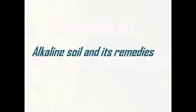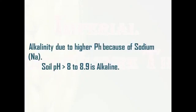So nowadays, alkaline soil is a very important point. Some areas are again and again facing this problem. What is alkaline soil? Alkaline soil has a higher sodium or salt content. Due to higher pH or higher sodium, we call it alkaline soil. The soil pH level is minimum 8 and maximum 8.9 — that is what we call alkaline soil.